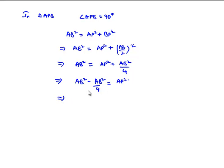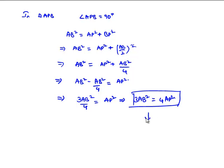That implies, let us take LCM as 4 times AB square by 4. Then we get 3 times AB square by 4 is equal to AP square. That implies 3 times AB square is equal to 4 times AP square, which is the required proof for us.